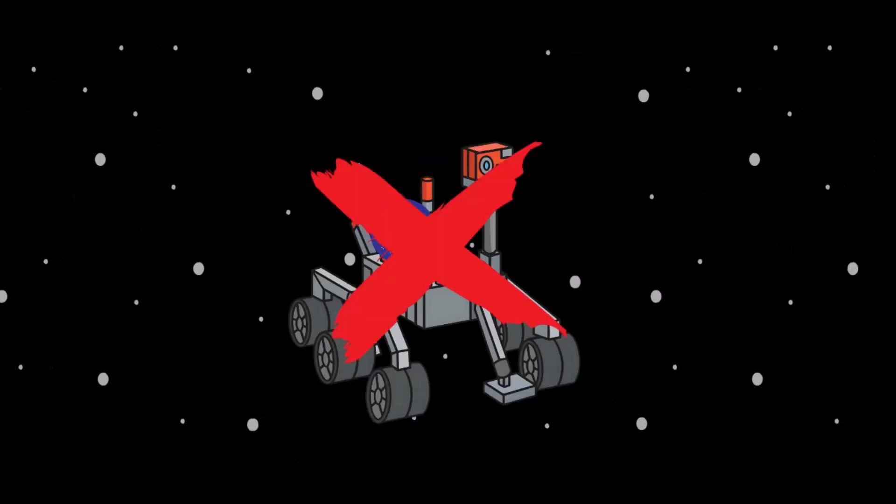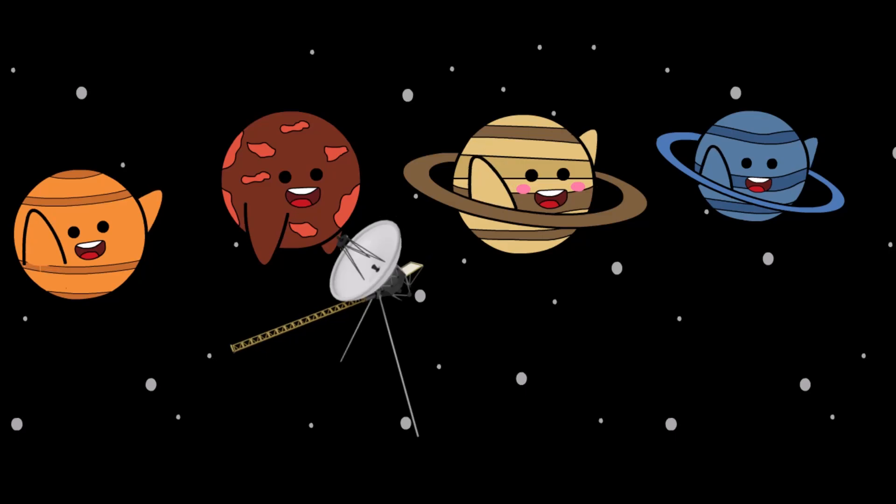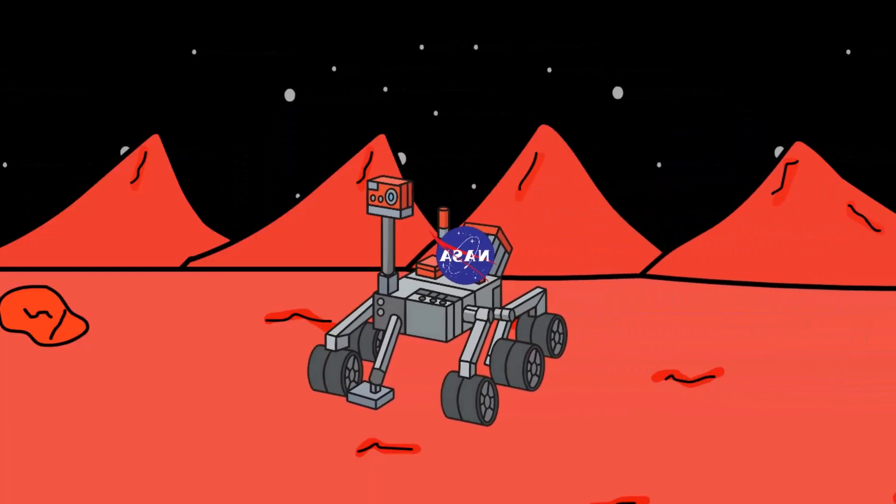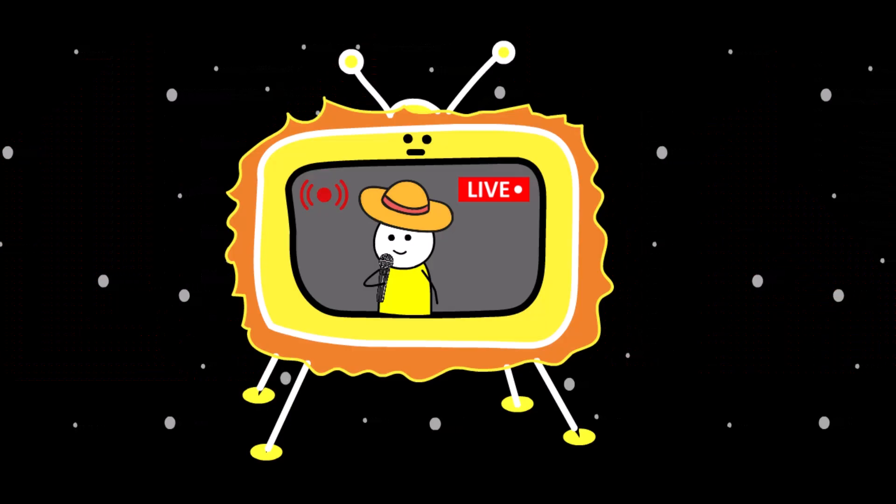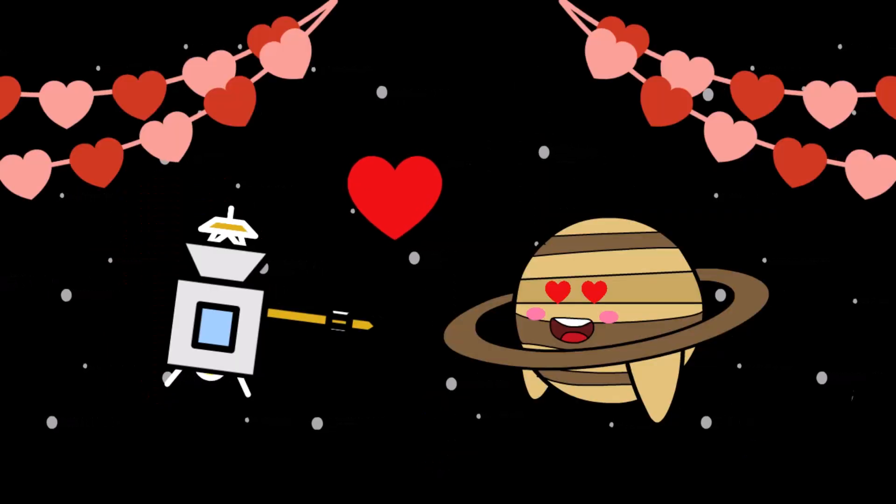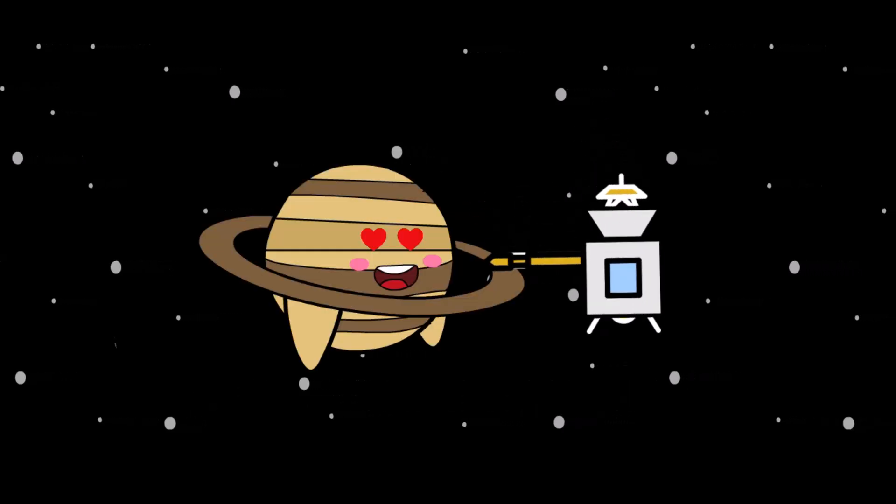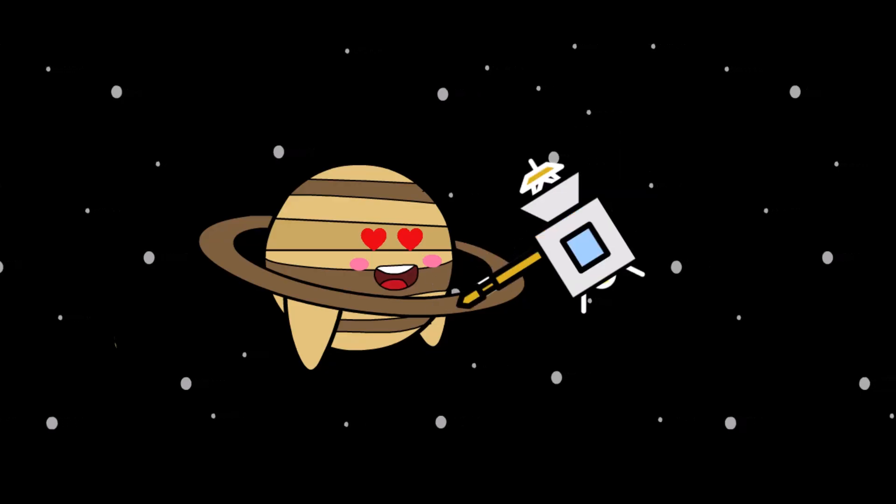Since then, nothing. No rovers, no orbiters, no second dates. Neptune's basically been ghosted by NASA ever since. Meanwhile, other planets are practically celebrities. Mars has been crawling with rovers for years. Saturn had an entire love affair with the Cassini mission. That spacecraft spent 13 years orbiting the gas giant, sending back breathtaking photos and gathering valuable data.